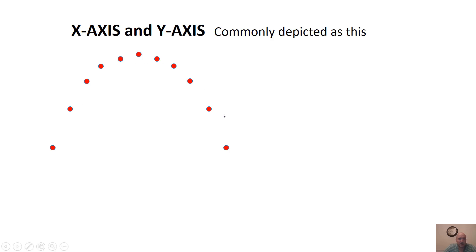Overall, this kind of motion is slowing down on the way up and speeding up on the way down. The X axis is in constant motion, whereas the Y axis is accelerating — slowing down on the way up and speeding up on the way down because it's always accelerating downward at 10 meters per second every second.